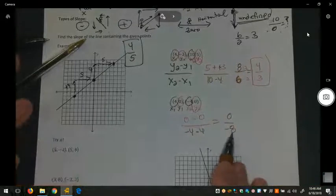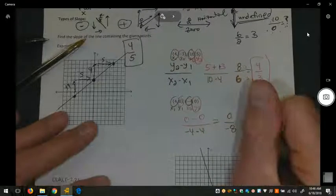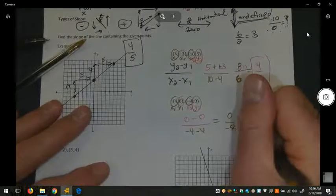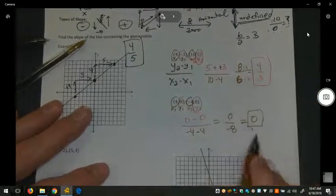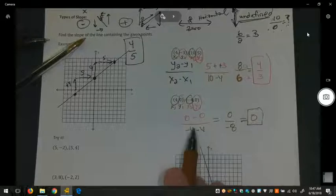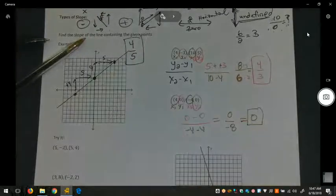I don't have a denominator of zero, so this is a defined number. Zero divided by any number is zero, so this is a zero slope. When we look at the graph of it, we would expect a horizontal line.